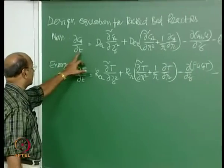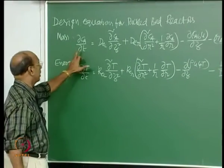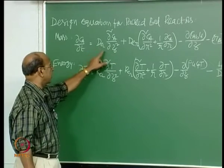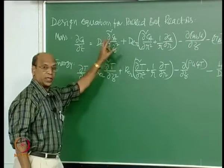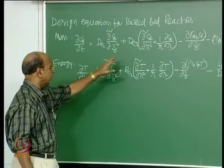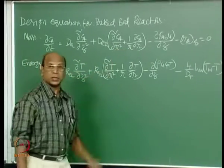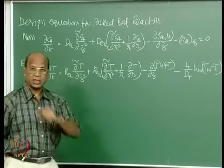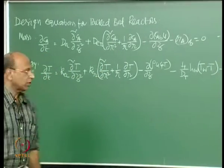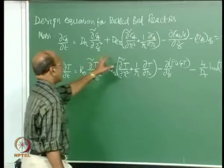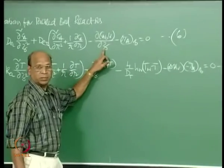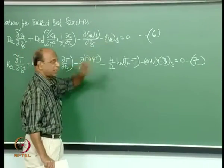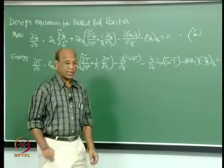Then this is the axial dispersion term — this is the axial dispersion coefficient, correspondingly the change in concentration with length. This is the radial dispersion term, and the radial dispersion term will have this form because of the cylindrical coordinates. Then this is the actual convection term — the actual flow — and this is the rate of reaction term.